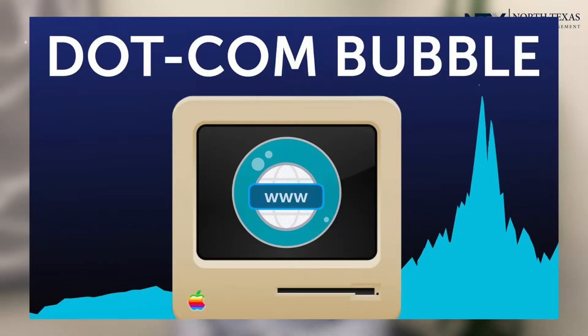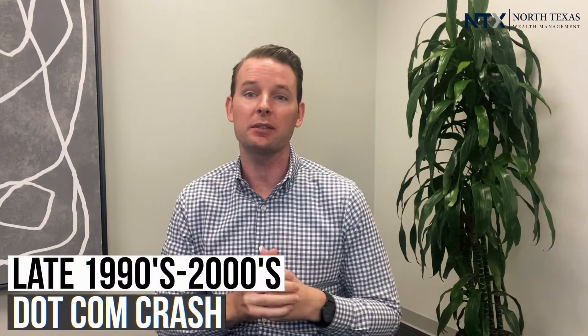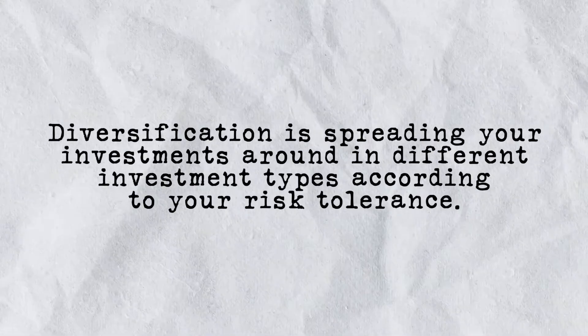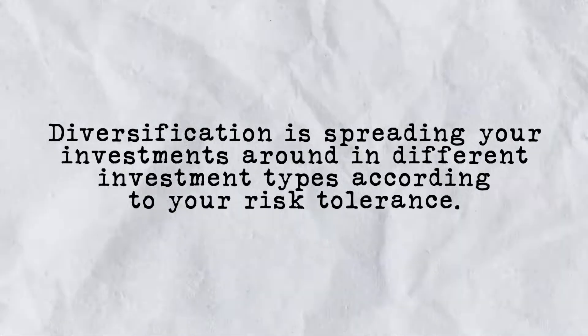Here's why: the dot-com bubble is one example of a particular investment type — tech stocks outperforming everything over the late 90s leading up to the 2000 dot-com crash. If you had put all of your investments, all your eggs in one basket, because that was the top performer, you would have really gotten hit hard during the dot-com crash. Diversification is spreading your investments around in different investment types according to your risk tolerance, such that if any drastic event happens to any one of them, the overall portfolio is not totally incapacitated.